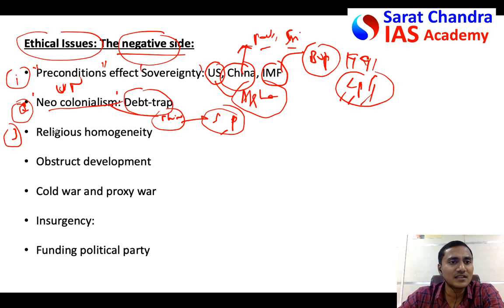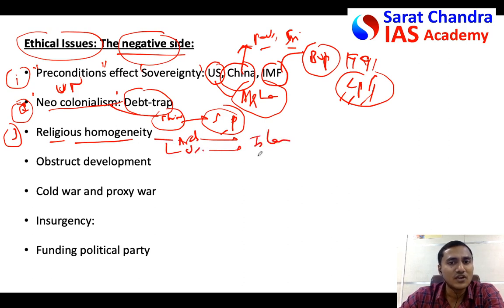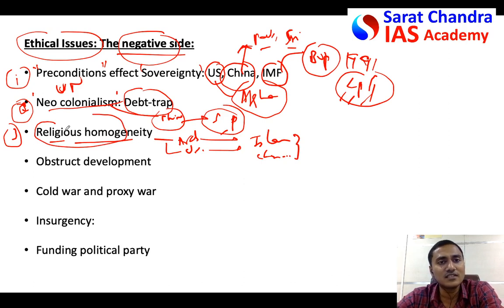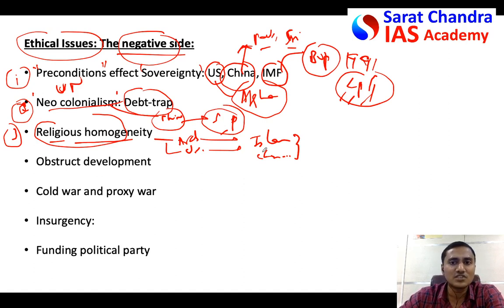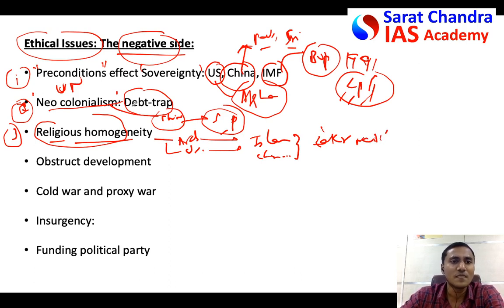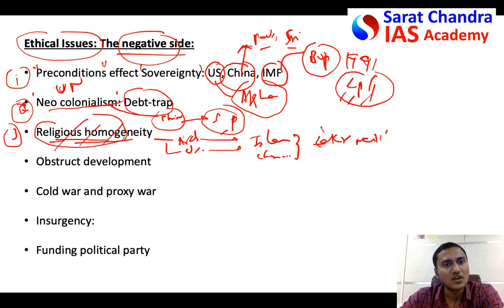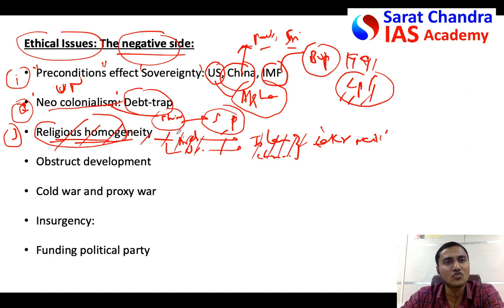Another negative aspect is funding for religious purposes - for example, funding from Arab countries towards developing Islam, or funding from the USA or UK towards development of Christianity in other countries. This kind of international funding is used for religious conversions or religious homogeneity. The Zakir Naik case is an example of this kind of international funding. Friends, be careful when writing such points - these are sensitive issues, so write them carefully or leave them to avoid hurting the evaluator's sentiments.